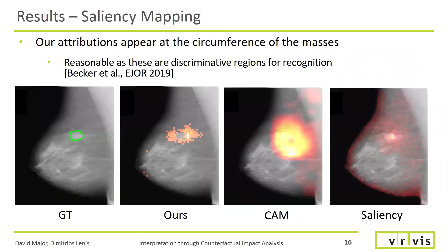Concluding, all quantitative evaluations show smaller, more precise, and informative attribution maps. Qualitatively, as exemplified here, attributions appear at the circumference of the masses, which is in line with recent work.